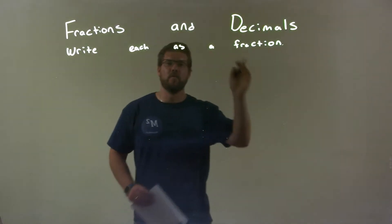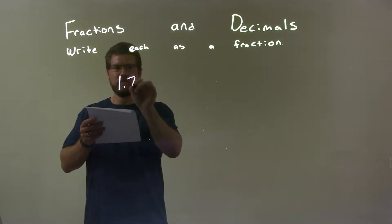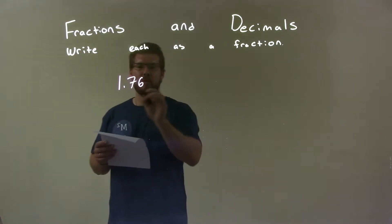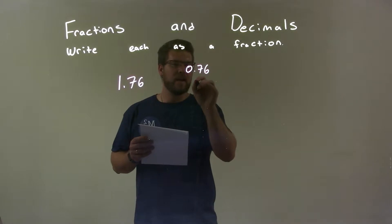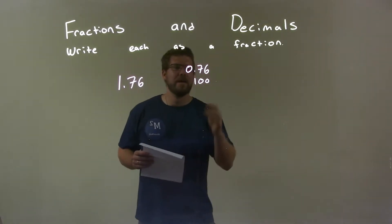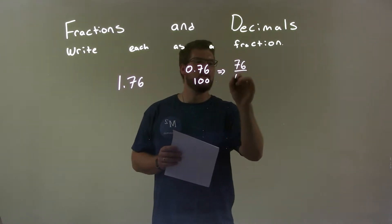I'm going to write each as a fraction. So, if I was given this decimal, 1.76, and I had to write that as a fraction. Well, I take the 0.76 and I put a 1 where the decimal is and two zeros afterwards to match the 76. That lets me know that I can rewrite this to be 76 over 100.